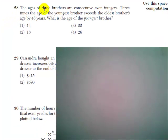Number 28. The ages of three brothers are consecutive even integers. Three times the age of the youngest brother exceeds the oldest brother's age by 48 years. What is the age of the youngest brother?